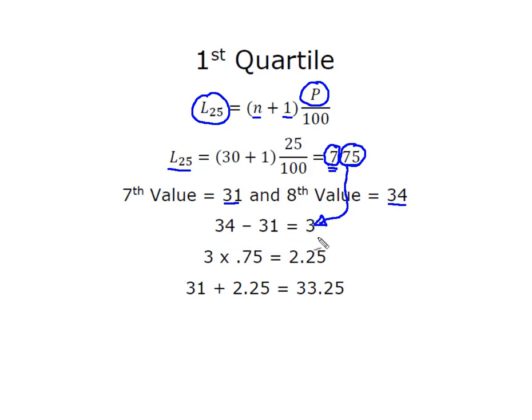So I simply subtracted the two, found out that there were three apart, took that three multiplied it by the 0.75 which is that less than a whole number that we moved, came up with 2.25 and we need to add the that little remainder part back to the seventh value and now we know that we're at 33.25 is the location of Q1.